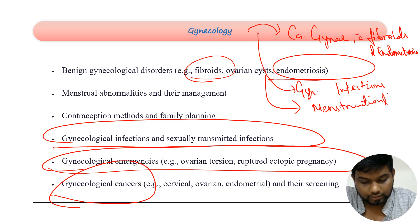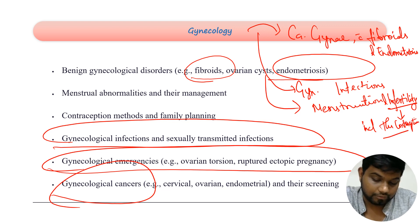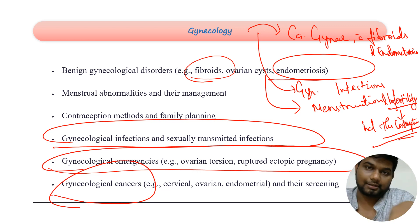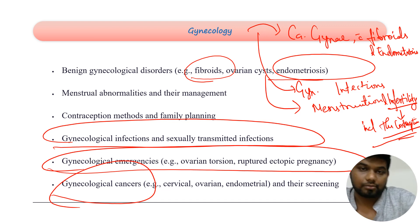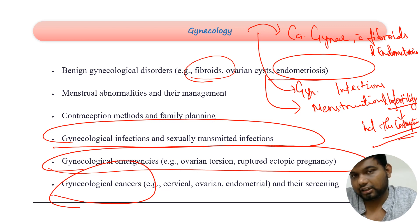Menstruation and infertility are areas you must focus on in gynecology. Infertility includes contraception. If you are not covering contraception here, you must cover it in PSM. Either way, you should have mastered contraception, because it is a high-interest topic where you can expect a lot of questions in previous FMGE examinations — there is a high chance of one or two questions from contraception.